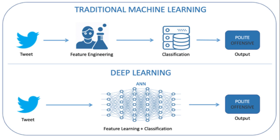Let's compare machine learning with deep learning to understand their subtle differences. When tweets are fed into a deep learning algorithm, deep learning can automatically discover the features to identify whether a tweet is offensive or not, whereas machine learning requires these features to be provided manually. Furthermore, in contrast to machine learning, deep learning needs high-end machines and a considerably large amount of training data to deliver accurate results.